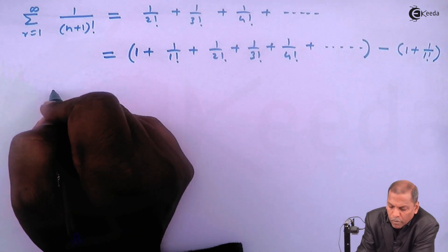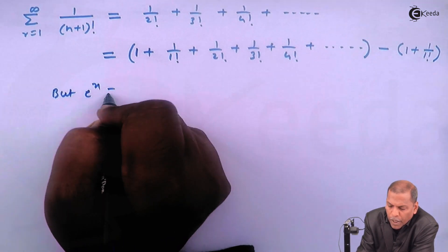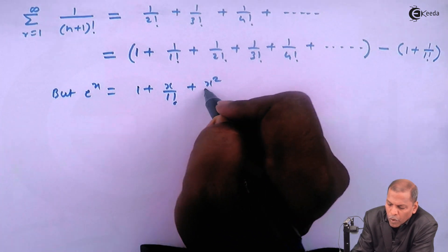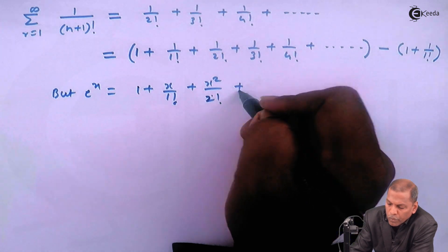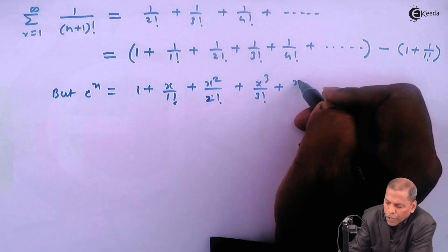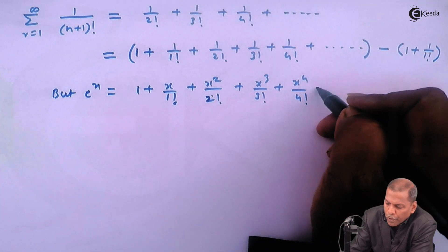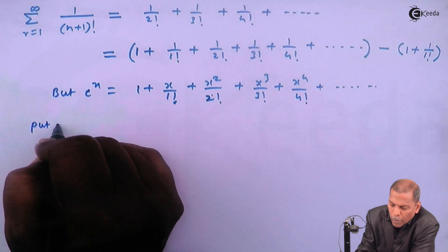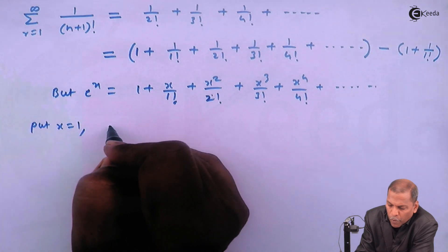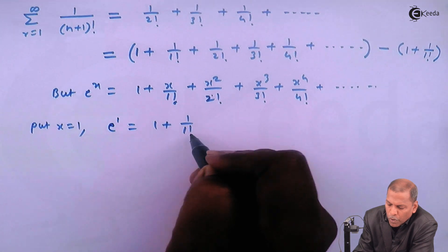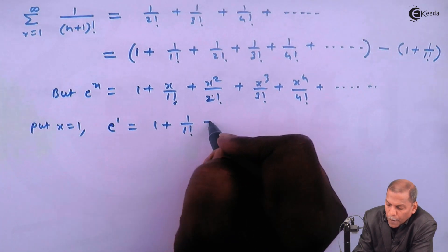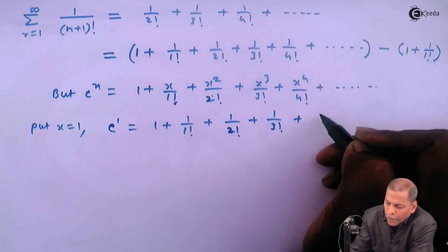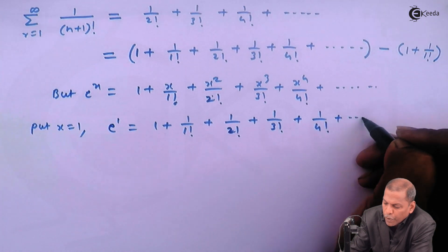Now we recall that e raised to x is equal to one plus x upon one factorial plus x squared upon two factorial plus x cubed upon three factorial plus x to the fourth upon four factorial, and so on. This is the exponential series. Putting x equal to one, we have e equal to one plus one upon one factorial plus one upon two factorial plus one upon three factorial plus one upon four factorial, and so on.